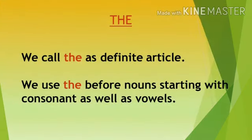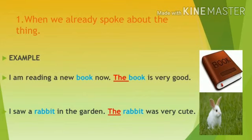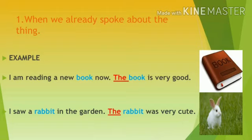The next article is THE. We call THE a definite article. We use THE before nouns starting with vowels as well as consonants. We use THE when we have already spoken about the thing. For example: I am reading a new book now — the book is very good. I saw a rabbit in the garden — the rabbit was very cute. In these examples, the nouns book and rabbit are repeated, so we use THE before them.